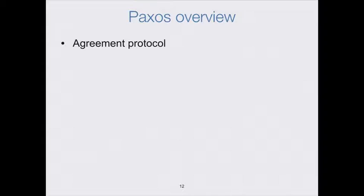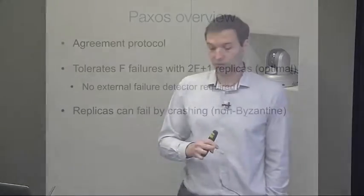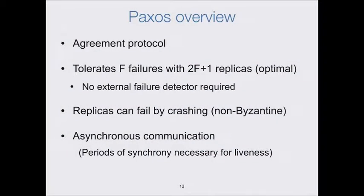Paxos at its core is an agreement protocol used by multiple processes to agree on one thing. It tolerates failures with 2f+1 total replicas, which is optimal because we don't depend on external failure detectors. Failures are non-byzantine — replicas can fail to reply for an indefinite amount of time, but they will not reply in ways that do not conform to the protocol. Communication is asynchronous, so we have no assumptions about synchronicity for the protocol to be safe, though we do rely on periods of synchrony to make progress.